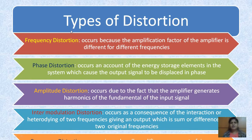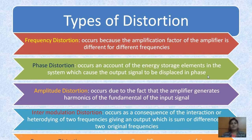There are various types of distortions. The first one is frequency distortion — when passing input through a device, the amplification factor in the amplifier is different for different frequencies, causing a disturbance in frequency. The second one is phase distortion, where energy storage elements in the system displace or change the phase factors.